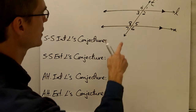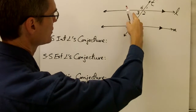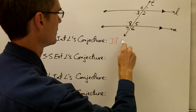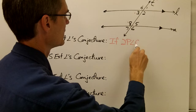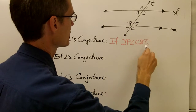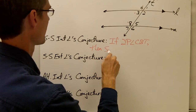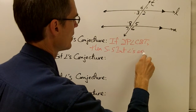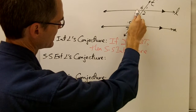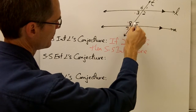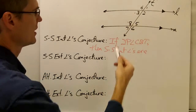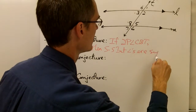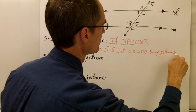My same side interior angles conjecture: same side interior angles are these two angles here. If two parallel lines are cut by a transversal, then same side interior angles are supplementary. Since I've got one angle that appears to be acute and one that appears to be obtuse, and they have to be either congruent or supplementary, I'm going to say same side interior angles are supplementary.